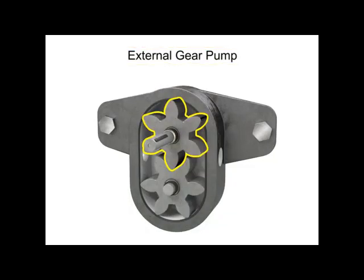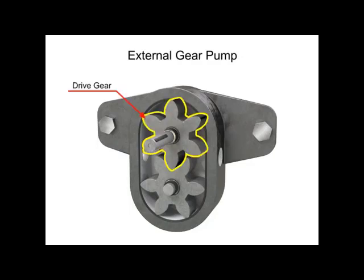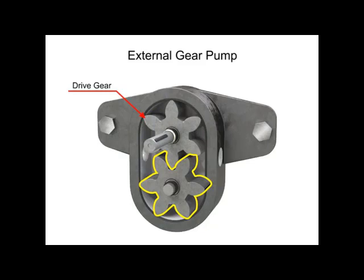One gear is driven by a motor connected to a shaft. This is called the drive gear because it is driven by a motor, and it in turn meshes with and drives the movement of the second gear.